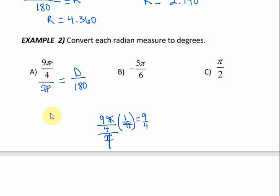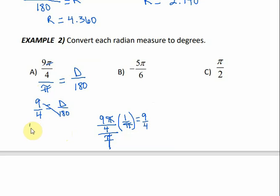When I divide by pi, the pi's cancel. So I have 9 over 4 is equal to D over 180, and then I cross-multiply. When I multiply 9 times 180, I get 1620 over 4 equals D. When I divide that, I get 405 degrees.